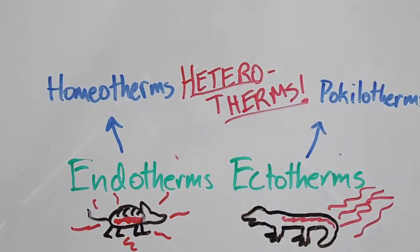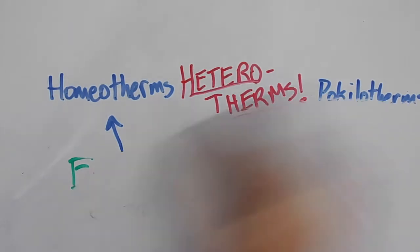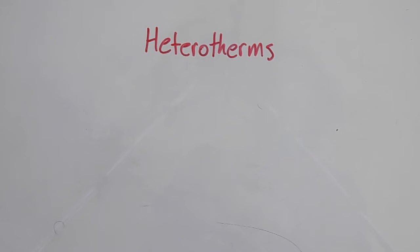Heterotherms are somewhere in the middle of these two, having constant body temperatures from metabolic activity at some points, and variable body temperatures when the metabolism isn't active. It is this group, heterotherms, that we are going to be talking about today, the hibernators. And it is this trick of the metabolism that makes these animals so cool.